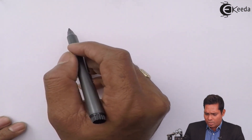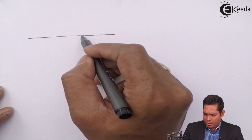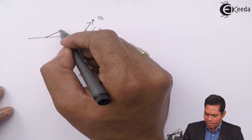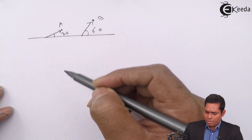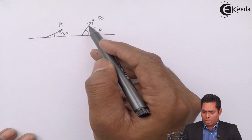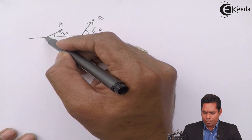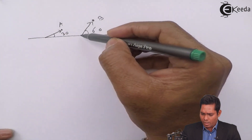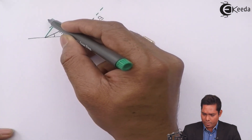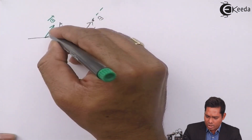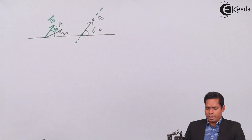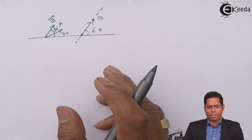B was moving at 60 degrees and A was moving at 30 degrees. So relative to A, we need to find the direction of B's velocity. If A is moving at 30° and B at 60°, the angle between them is 30°. So relative to A, B is at an angle of 30 degrees.